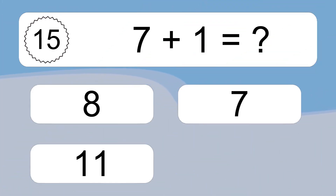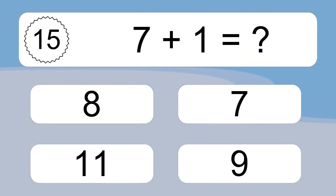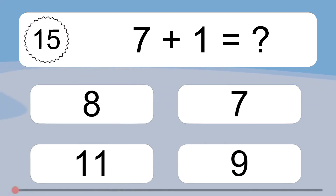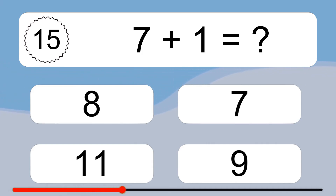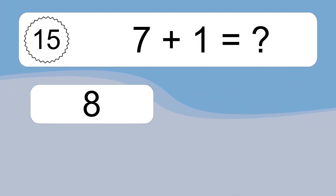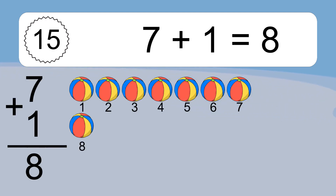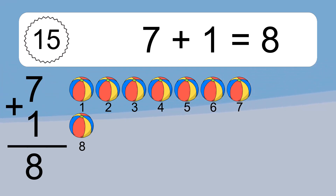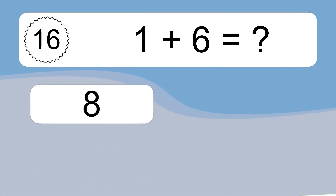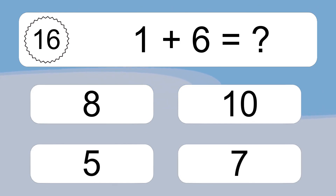7 plus 1 equals what? 7 plus 1 equals 8. Let's count it: 1, 2, 3, 4, 5, 6, 7, 8.